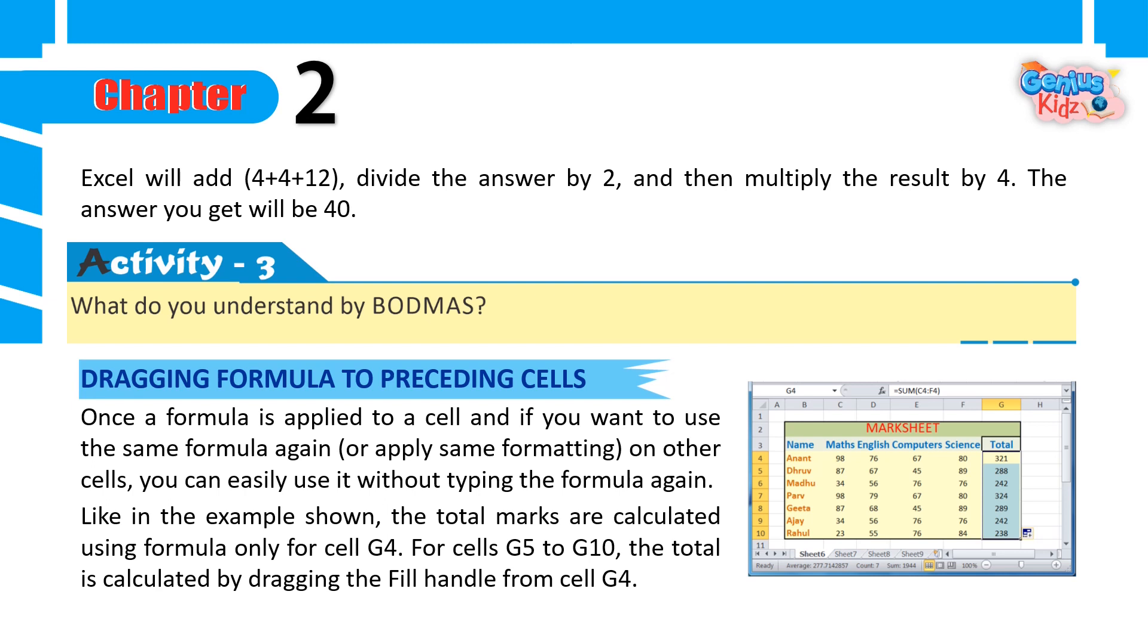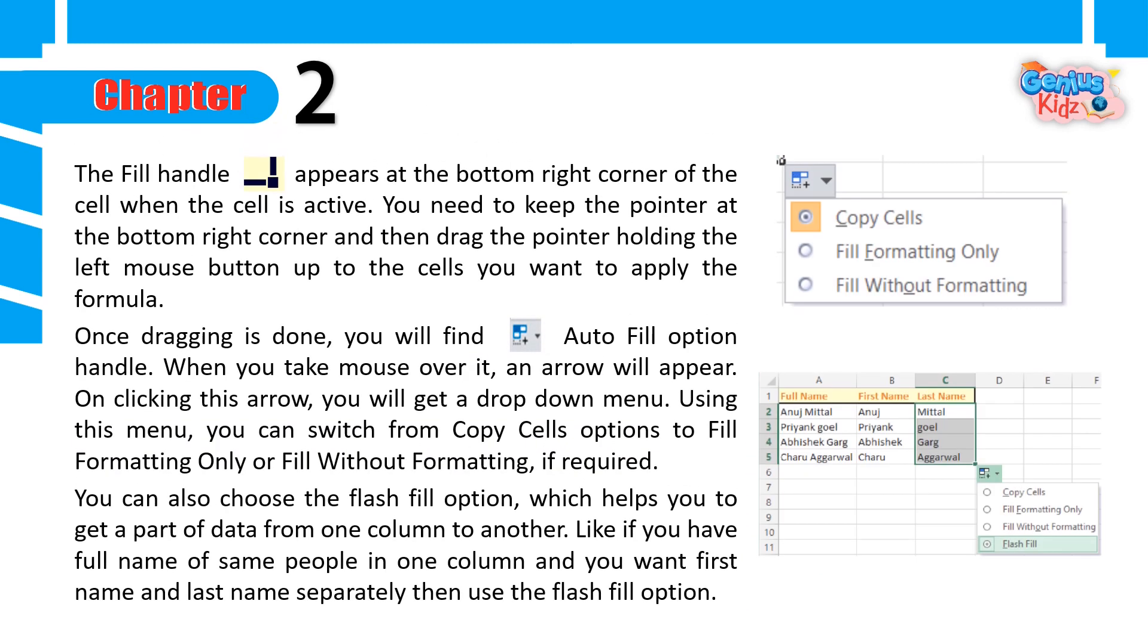Dragging formula to preceding cells: Once a formula is applied to a cell, and if you want to use the same formula again or apply same formatting on other cells, you can easily use it without typing the formula again. Like in the example shown, the total marks are calculated using formula only for cell G4. For cells G5 to G10 the total is calculated by dragging the fill handle from cell G4. The fill handle appears at the bottom right corner of the cell when the cell is active. You need to keep the pointer at the bottom right corner, and then drag the pointer holding the left mouse button up to the cells you want to apply the formula.